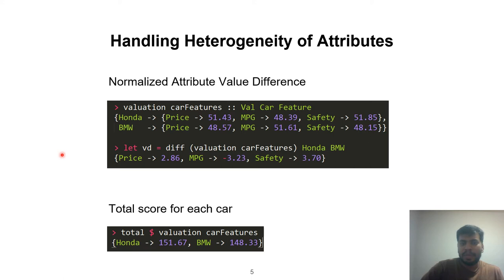Once we have normalized values, now we can compare them. The first thing that we want to do is compute an attribute-wise difference between Honda and BMW, giving us this set of numbers. We can also compare the total score for Honda and BMW. This tells us that Honda slightly edges BMW as the preferred car.